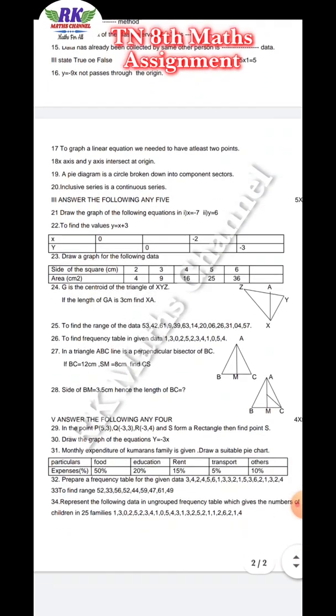Graphs - draw the graph of the following equation: X equal to minus 7, Y is equal to 6. To find the values of Y, that is Y is equal to X plus 3. Question number 23, draw the graph of the following.